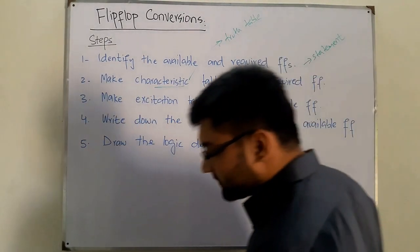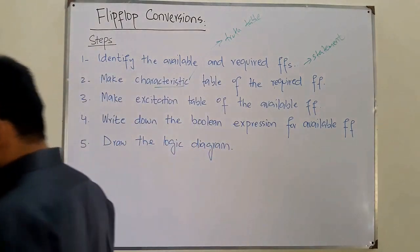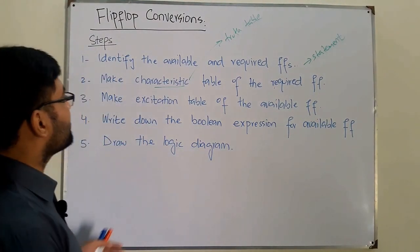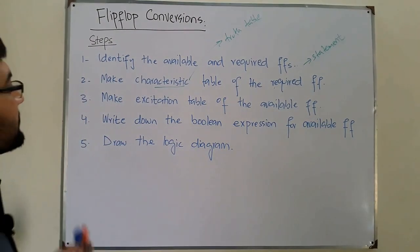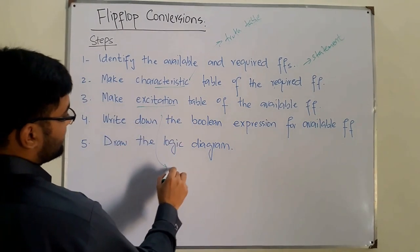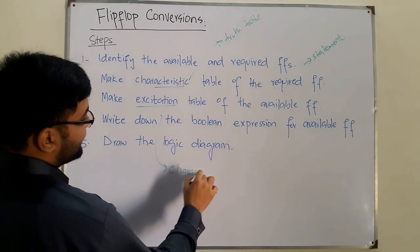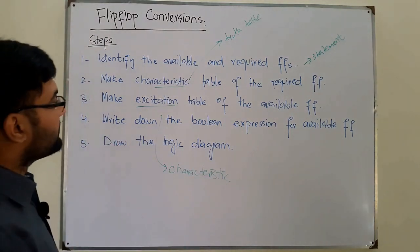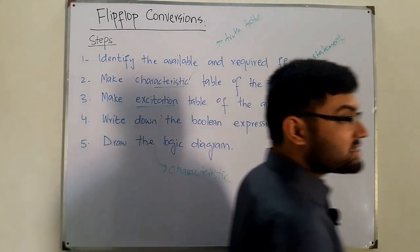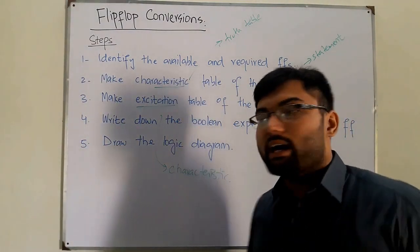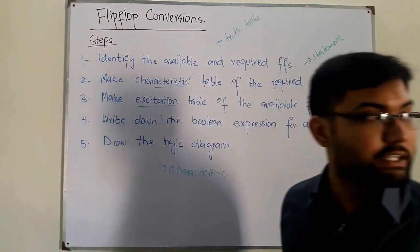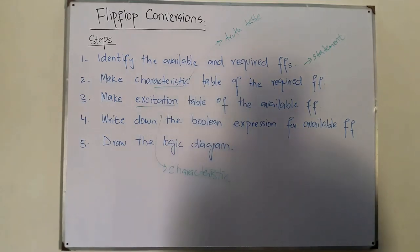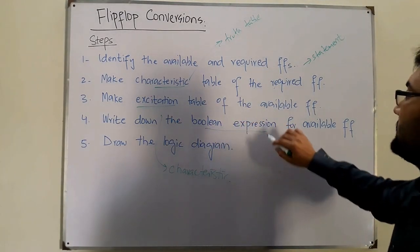In the characteristic table we have the present state and the present input, and with the help of those we find the next state. The excitation table is made with the help of the characteristic table. In the excitation table we have the present state and the next state, and we find the present inputs with the help of these two states.